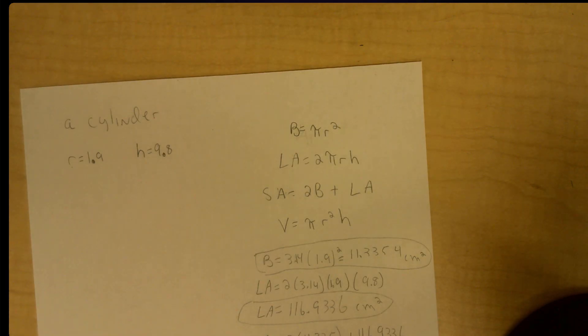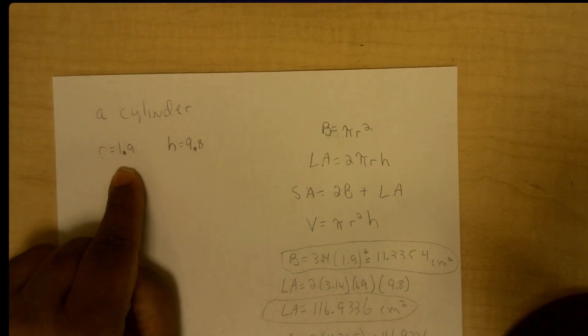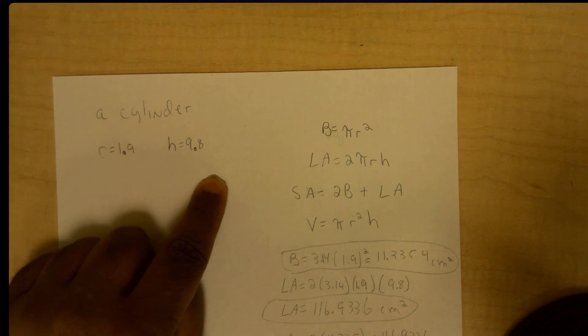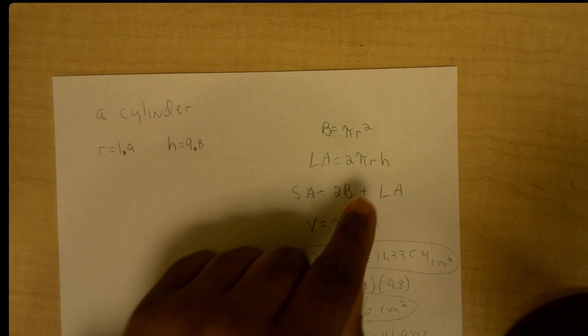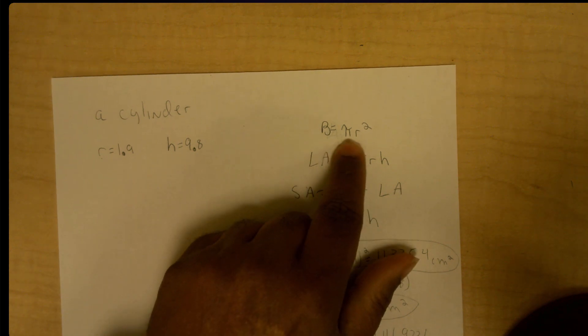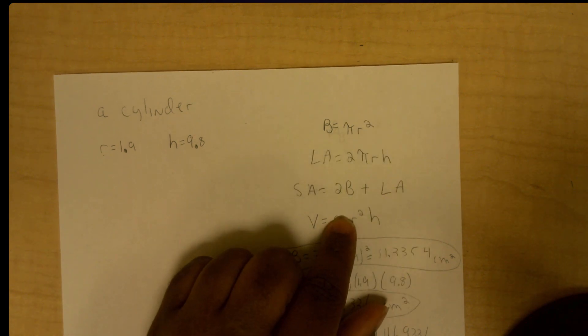So I have my radius here and my height here. I know that for a cylinder, the base is going to be simply the area of a circle, which is pi r squared. And we have to find the lateral area, which is just around the outer edge of the circle.